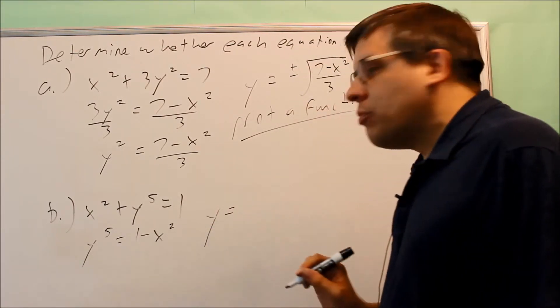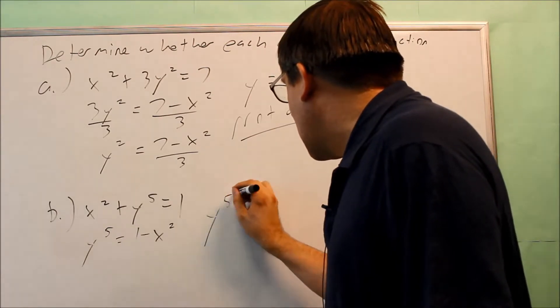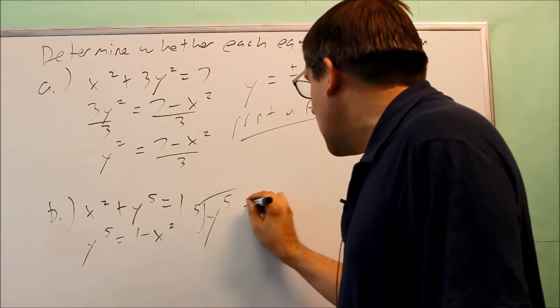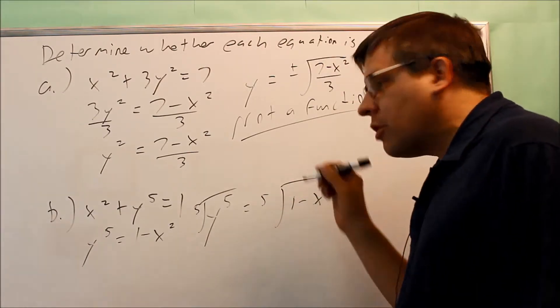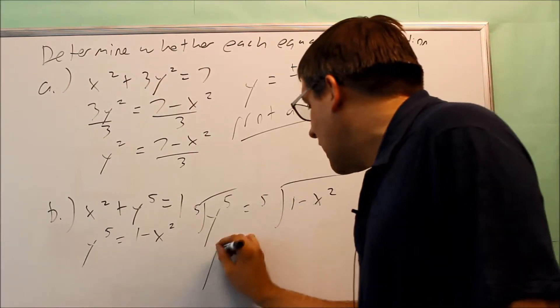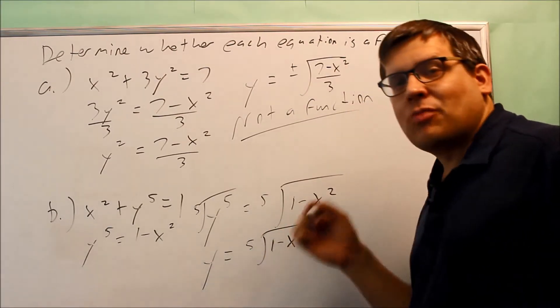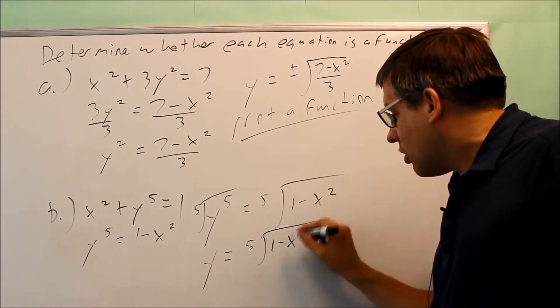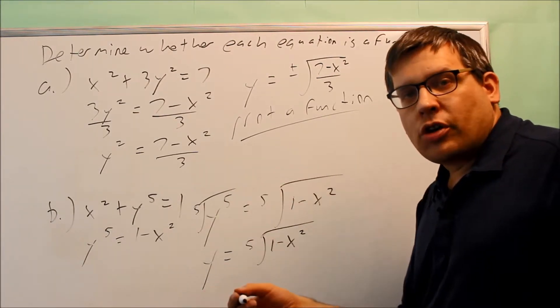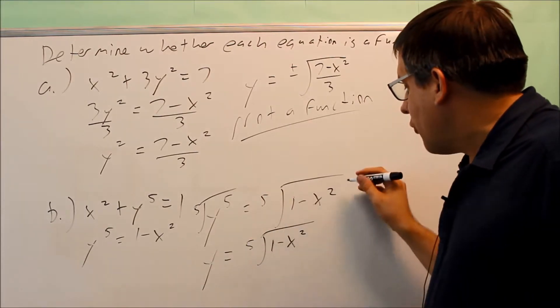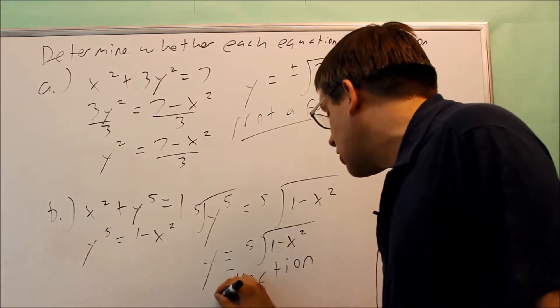So y, if we take the fifth root of both sides, so what that looks like is I have the fifth root of this side and I have the fifth root of the other side. Again, I don't need to put plus or minus on this one. I get y equals the fifth root of 1 minus x squared. Now because there's no plus or minus here, if I put a 0 in for that, I'm only going to get one answer. So that one input, I only got one output. So for this particular one, this is a function.